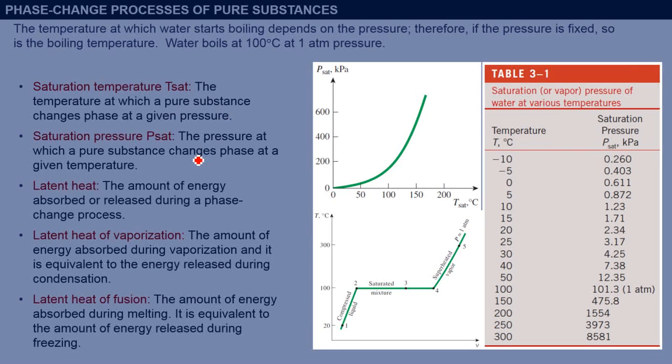On the other hand, there is a similar definition for saturation pressure. When you fix the temperature, the boiling point of water at that temperature is called saturation pressure. For example, if you want to boil water at 40 degrees Celsius, you have to reduce the pressure to 7.38 kilopascals.